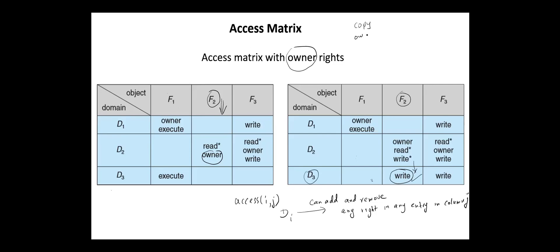The copy and owner rights allow a process to change the entries in a column. To change the entries in a row, the control right is used.